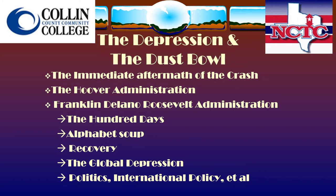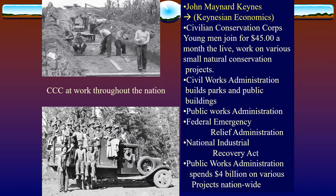We'll talk about an icon of the alphabet soup programs, then continued recovery and other examples of them. We'll talk about the global depression, and then politics — FDR did not have it all his own way. There was pushback from the Supreme Court and problems within his own Democratic Party. Then we'll cover international politics and isolationism, ending the 1930s presentation. From there it goes to the rise of the dictators, which will be your next assignment on YouTube.